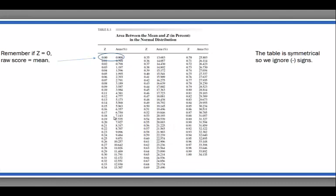We also have what are known as z-tables that allow us to make calculations regarding the percentage of scores that fall above, below, or between scores that we're interested in. In a z-table, a z of zero is associated with the mean. The table title is 'the area between the mean and z in percent in the normal distribution.' For example, a z-score of 1.0 is associated with the number in the table of 34.135.